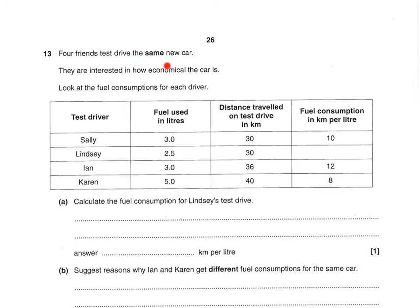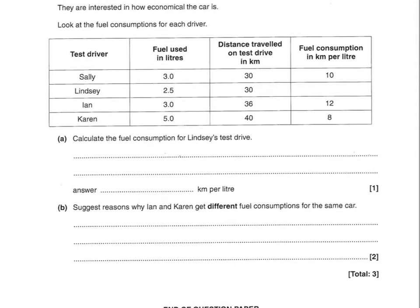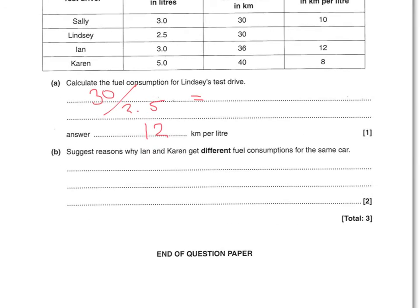The last question: four friends test drive the same new car. Calculate the fuel consumption for Lindsay's test drive. Fuel consumption in km/L equals distance divided by fuel used: 30 ÷ 2.5 = 12 km/L. If you're unsure what to do, look at the other numbers in the table to see what calculation gives the correct results, then apply the same method. Finally, suggest reasons why Ian and Karen got different fuel consumptions for the same car — any two of: windows open, more electrics on, heavier load, more acceleration, driving faster, or more braking.